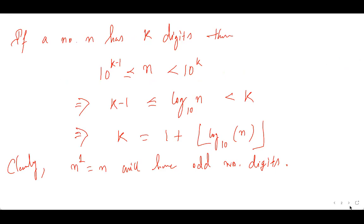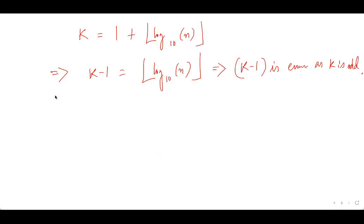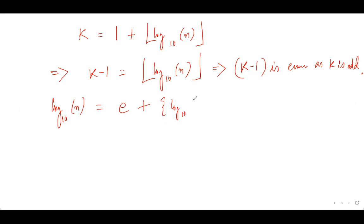We are only working with n that has an odd number of digits. So I can write log base 10 n as an even integer plus a fractional part, where the fractional part is greater than or equal to zero and strictly less than one.